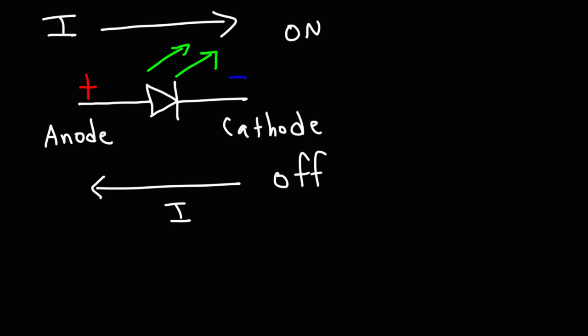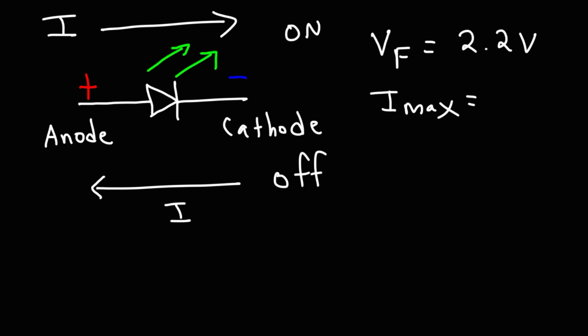Like all diodes, the LED will allow current to flow in one direction — that is, from the anode to the cathode — but it will block current from flowing in the other direction. If you're considering buying an LED for an electronics project, there are three things you need to take into consideration. The first is the forward voltage drop of the LED, which for a green LED is typically around 2.2 volts. This could vary depending on how much current is flowing through the LED, and we'll talk more about that later. The next thing is the maximum recommended current that should be flowing in the LED — some LEDs can handle a current of 20, some can manage 30 milliamps.